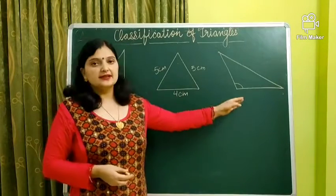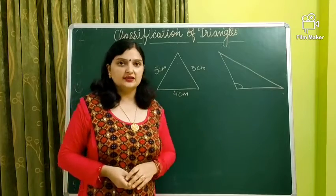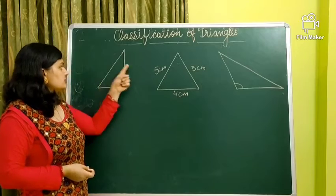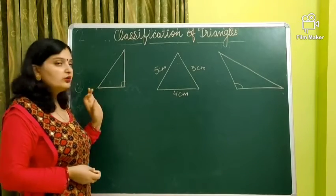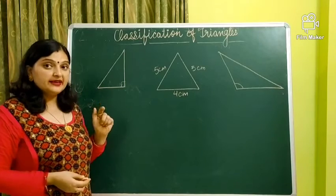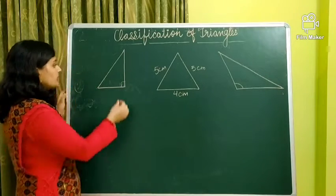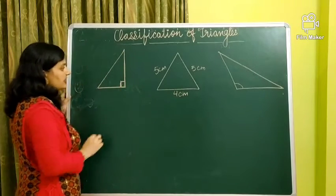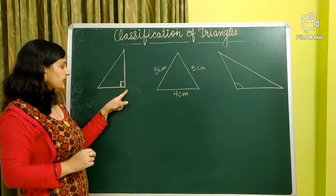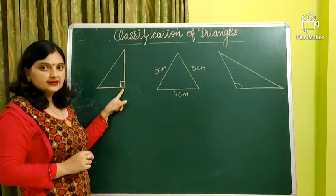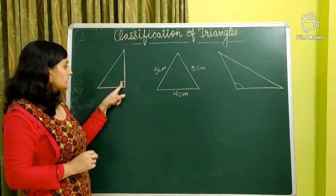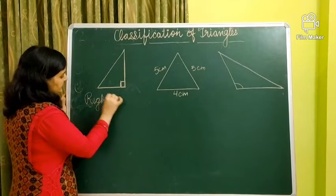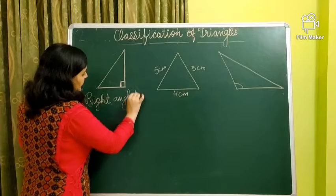Now I have drawn some triangles and you have to identify them. Look, this is a triangle but no sides are given, so it is not based on sides. If you look at it, this is a right angle — you can see the L-shape. So this is a right angled triangle.